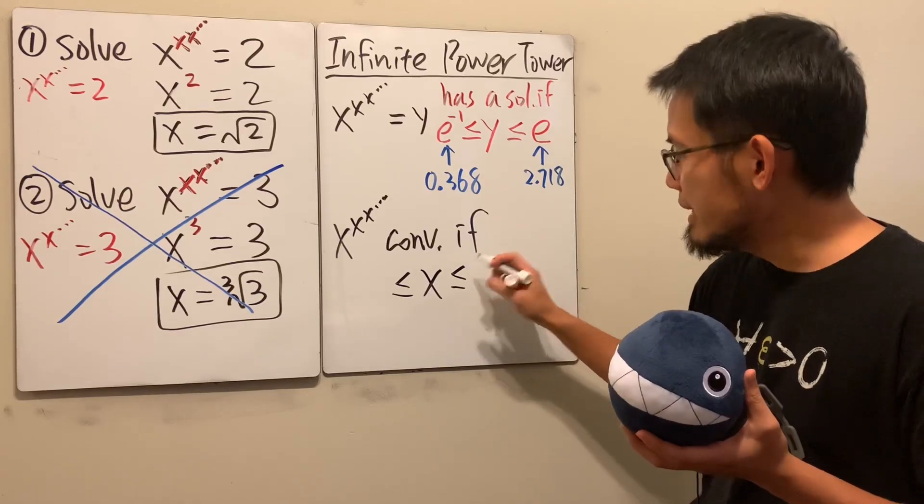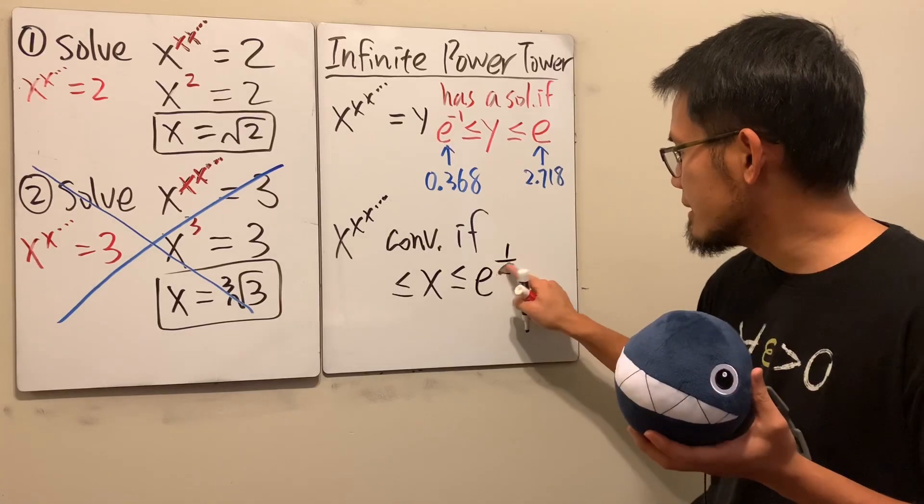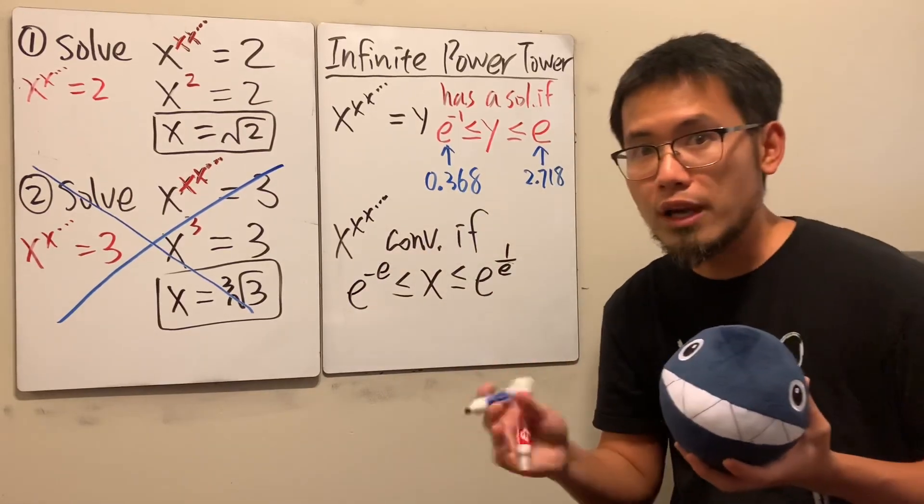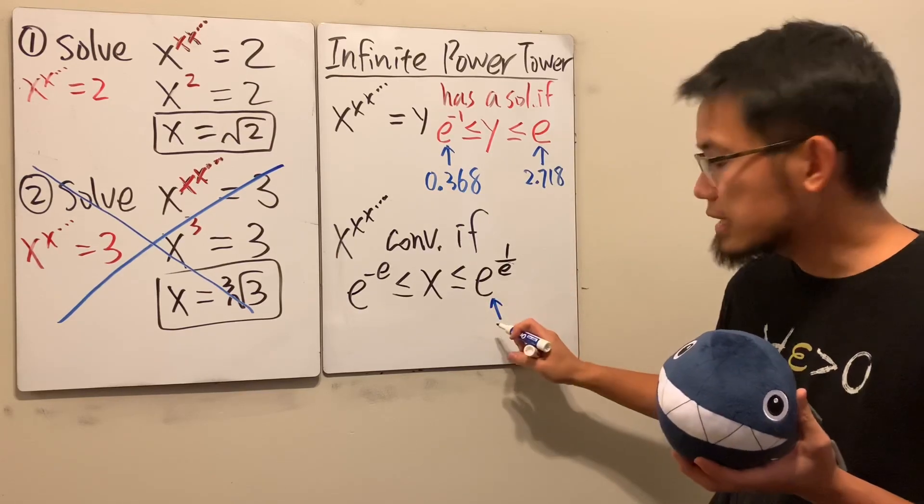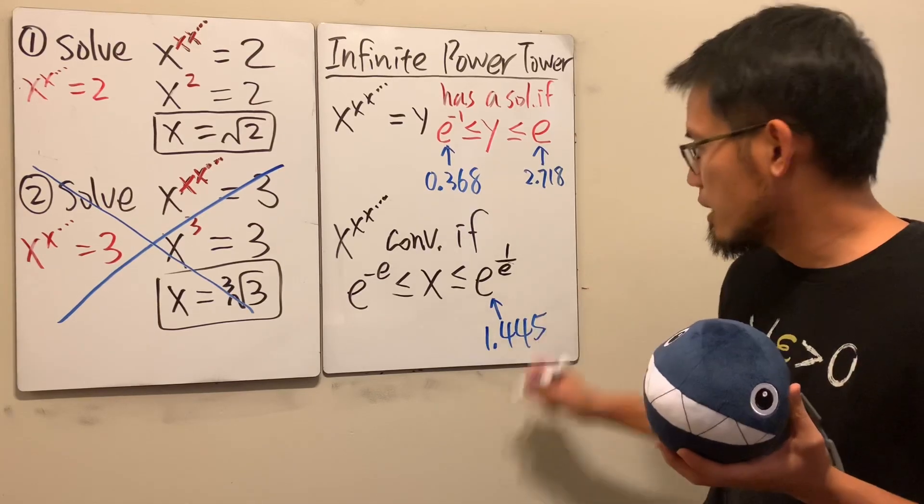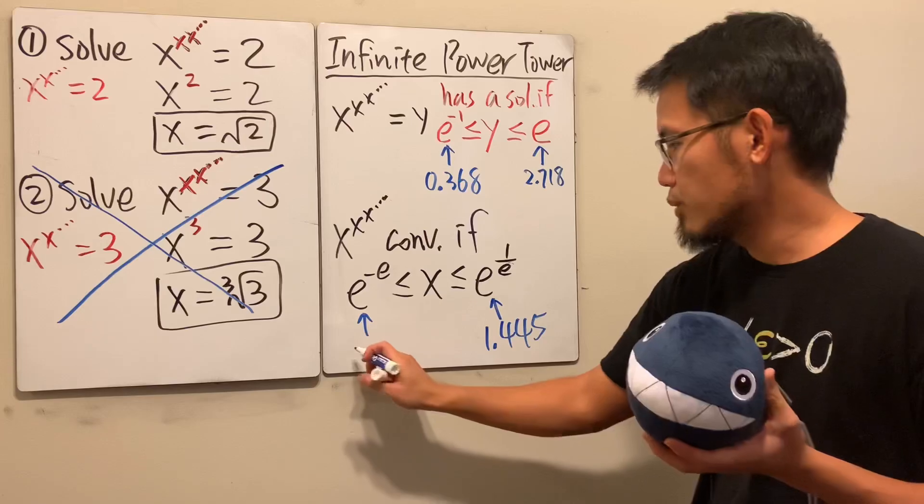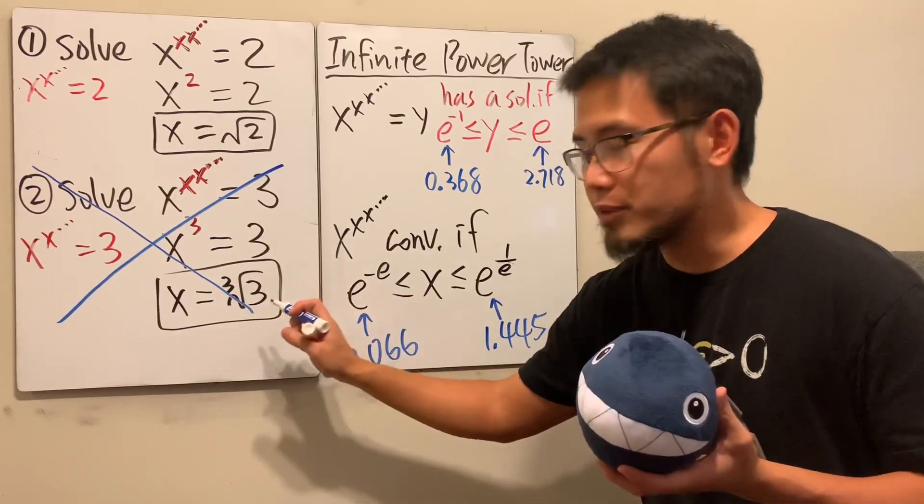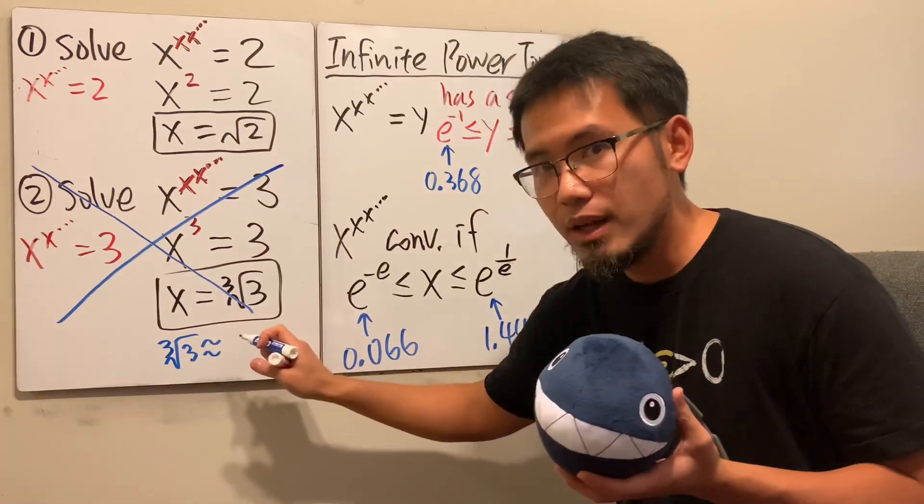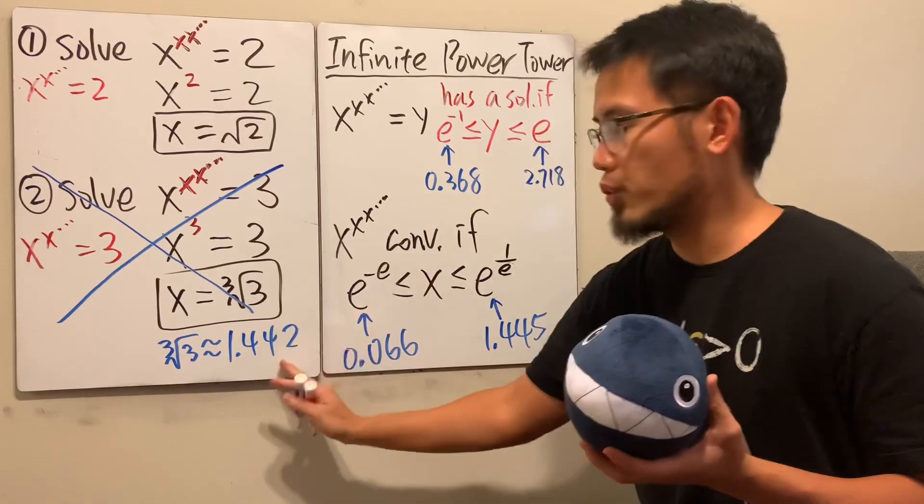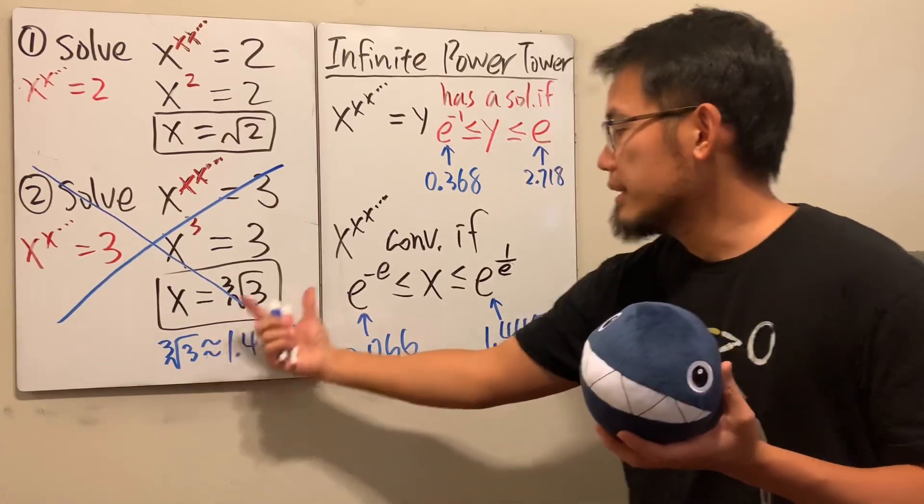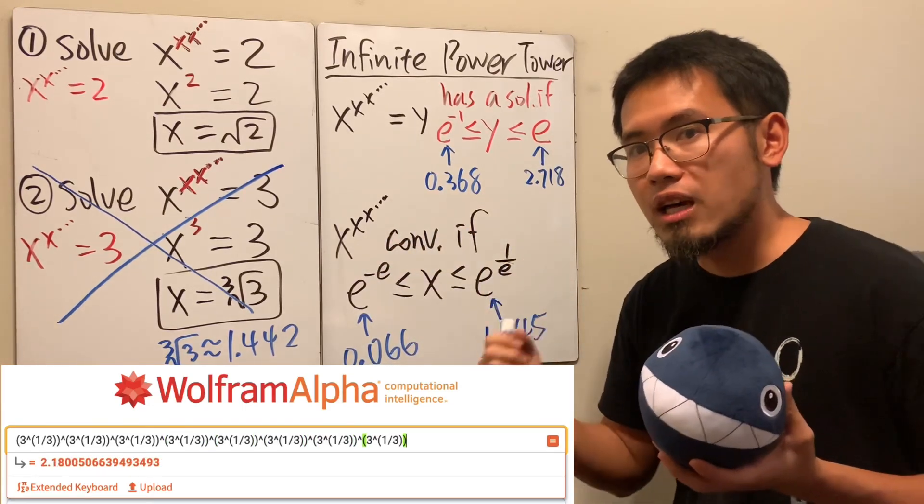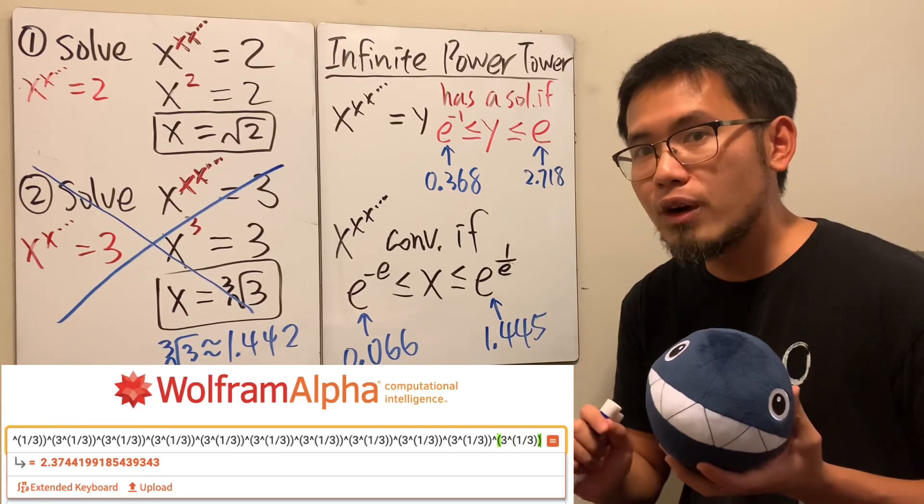E to the 1 over e is approximately 1.445, and e to the negative e is approximately 0.066. When we look at the cube root of 3, this is approximately 1.442. As you can see, this is between this and that. So if you plug in the cube root of 3 inside of the power tower, you actually get a convergence value—that limit actually does exist. However, the limit is not equal to 3. Unfortunately, this does not have an answer.